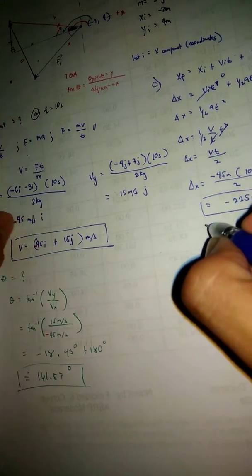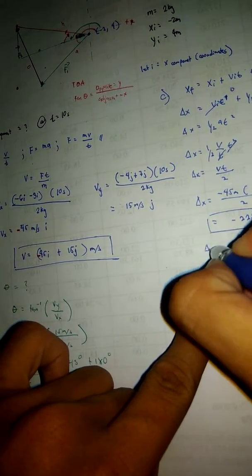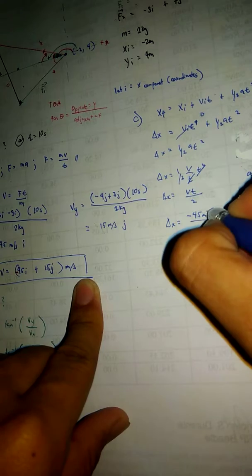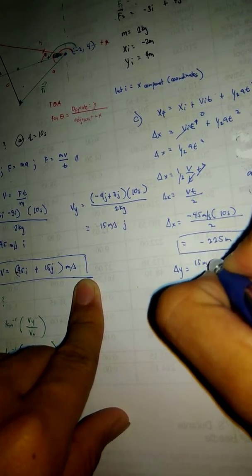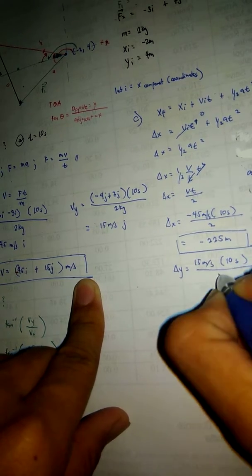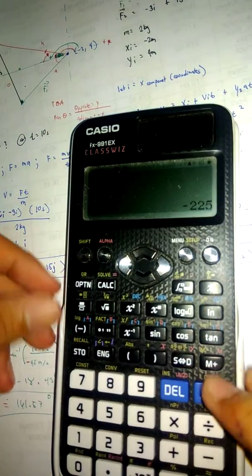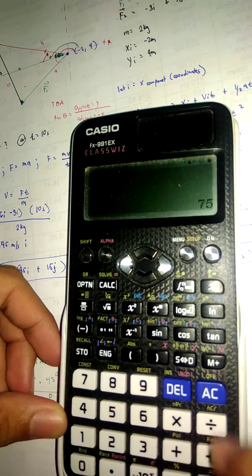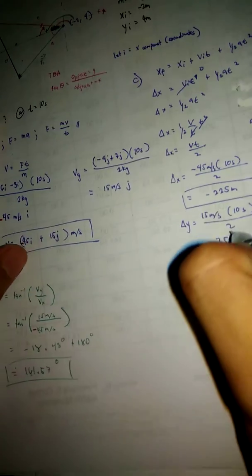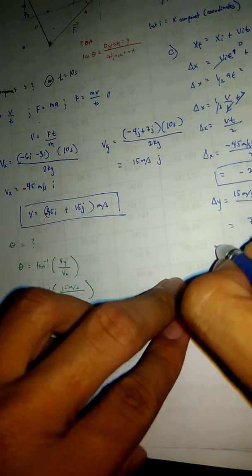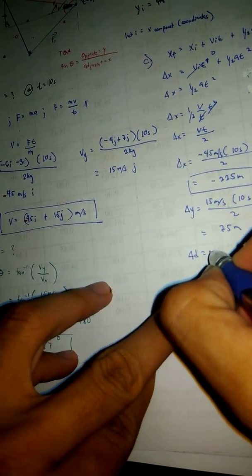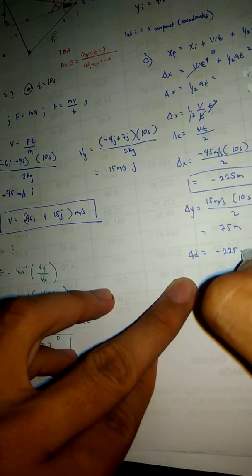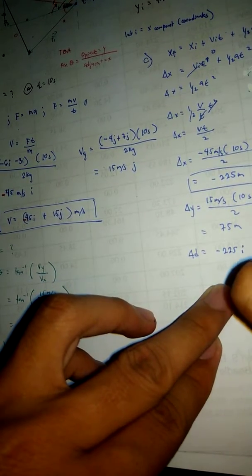We'll use the same formula for the displacement in the Y axis. It would be 15 meters per second times 10 seconds over 2 equals 75 meters. So the displacement is equal to negative 225 i plus 75 j.